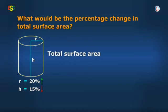Total surface area is equal to 2 pi R H plus 2 pi R square, and plus, not multiply.